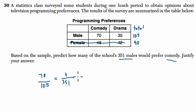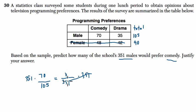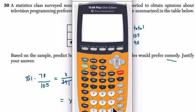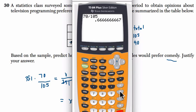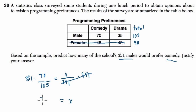So if we solve this proportion, what I would do is multiply both sides by 351. There's no need to cross-multiply — that would just be redundant. Some people will do two multiplications here, but just multiplying by 351 will give us the answer quickly. So we've got 70 divided by 105, multiplied by 351, and we get 234 — and that's our answer.